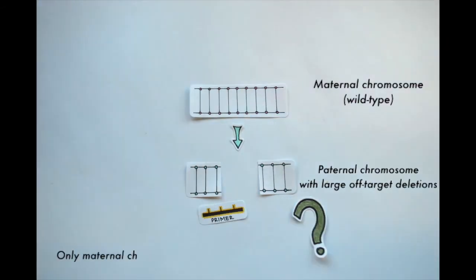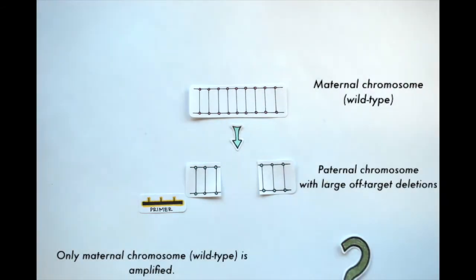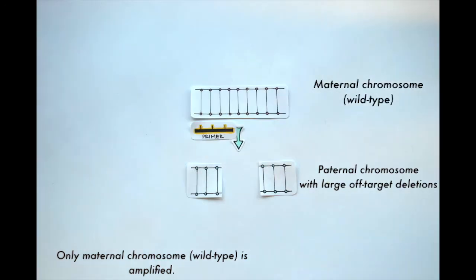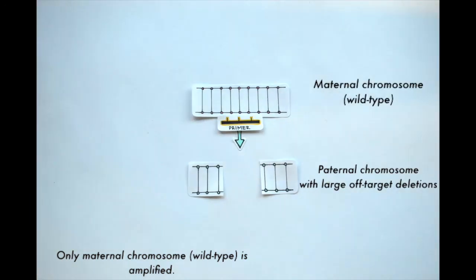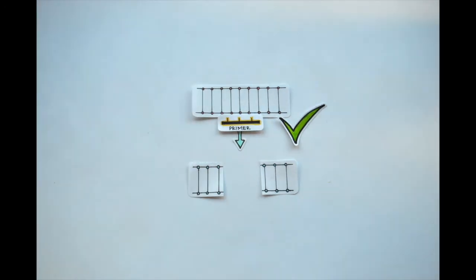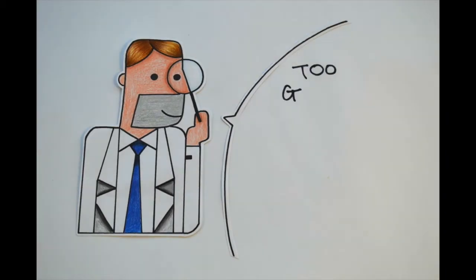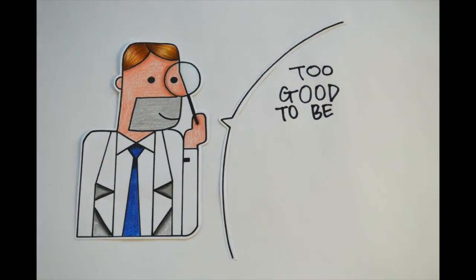This would mean that when the researchers performed PCR amplification, only the wild-type maternal allele could be amplified. This would give the misleading appearance that the paternal allele had been repaired using the wild-type maternal allele as a template, but really it had not been amplified at all. With this possibility in mind, Paul's team performed experiments to evaluate the hypothesis.